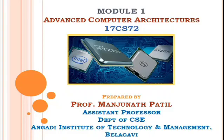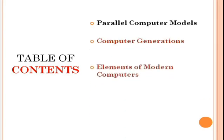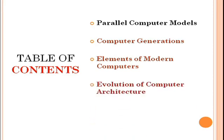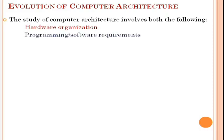Good morning students. In the previous videos we started with Module 1, where we came across the parallel computer models — computer generations and elements of modern computers. Today in this video lecture we will see the evolution of computer architecture. The study of computer architecture involves two things: hardware organization and programming or software requirements.